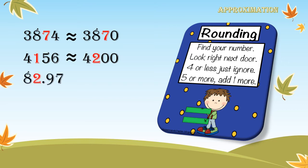Another example: 82 and 97 hundredths. I want to approximate this number to the nearest unit. Find your number — what is the number in the units place? Excellent — it's 2, already colored red. Look right next door — it's the tenths place. What is the number in the tenths place? It's 9. Five or more? Add 1 more. So I will add 1 to 2 — it will be 3. Replace 9 and 7 with 0. The answer will be 83.